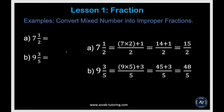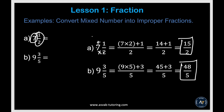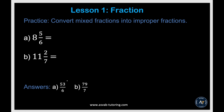Next, we'll learn how to convert a mixed number into an improper fraction. A mixed fraction has a whole number and a proper fraction. To convert, you multiply and add: for 7 and 1 half, 7 times 2 is 14 plus 1 gives 15 over 2. For 9 and 3 fifths, 9 times 5 is 45 plus 3 gives 48 over 5. Try the practice problems and make sure you get both answers correct.